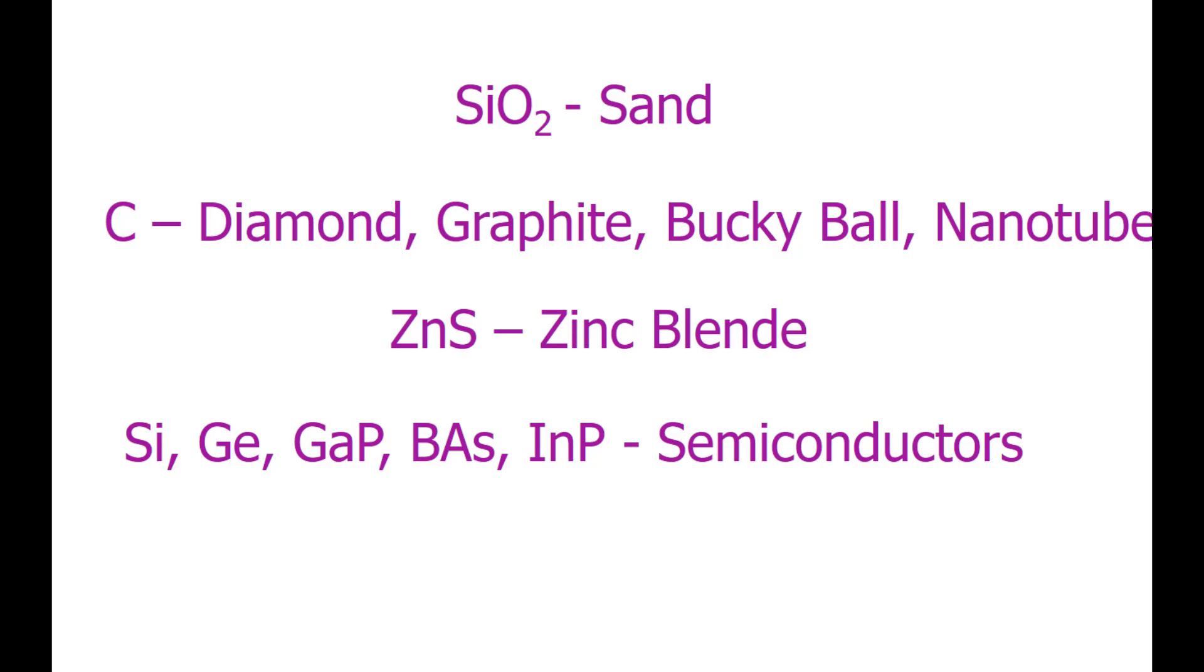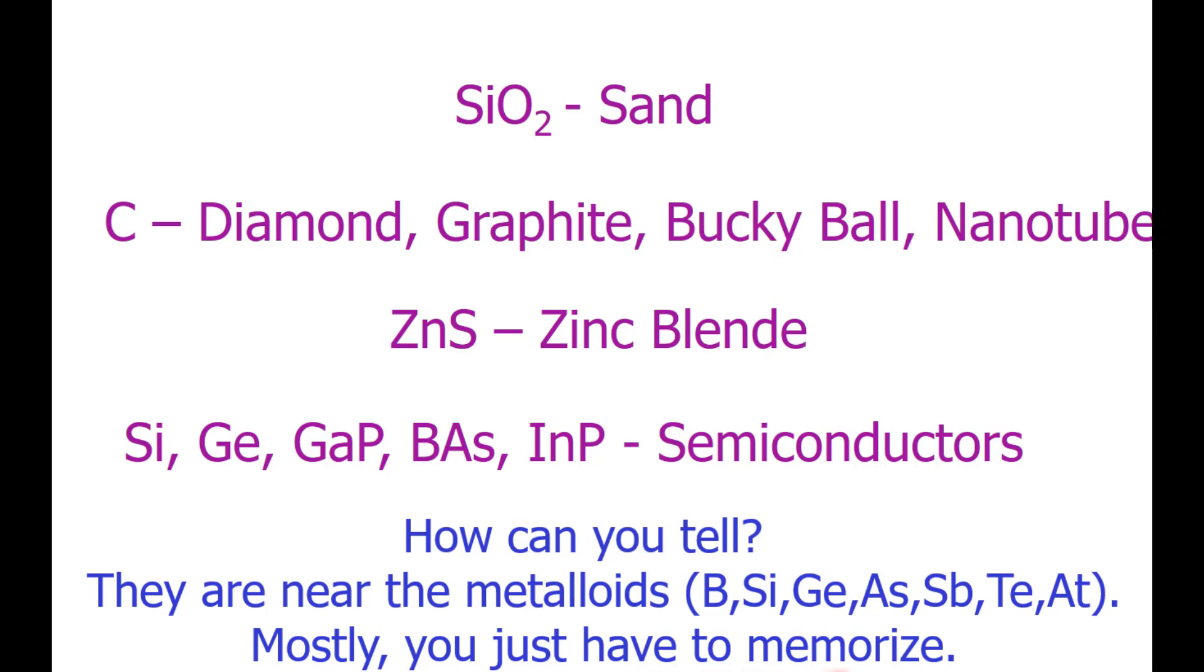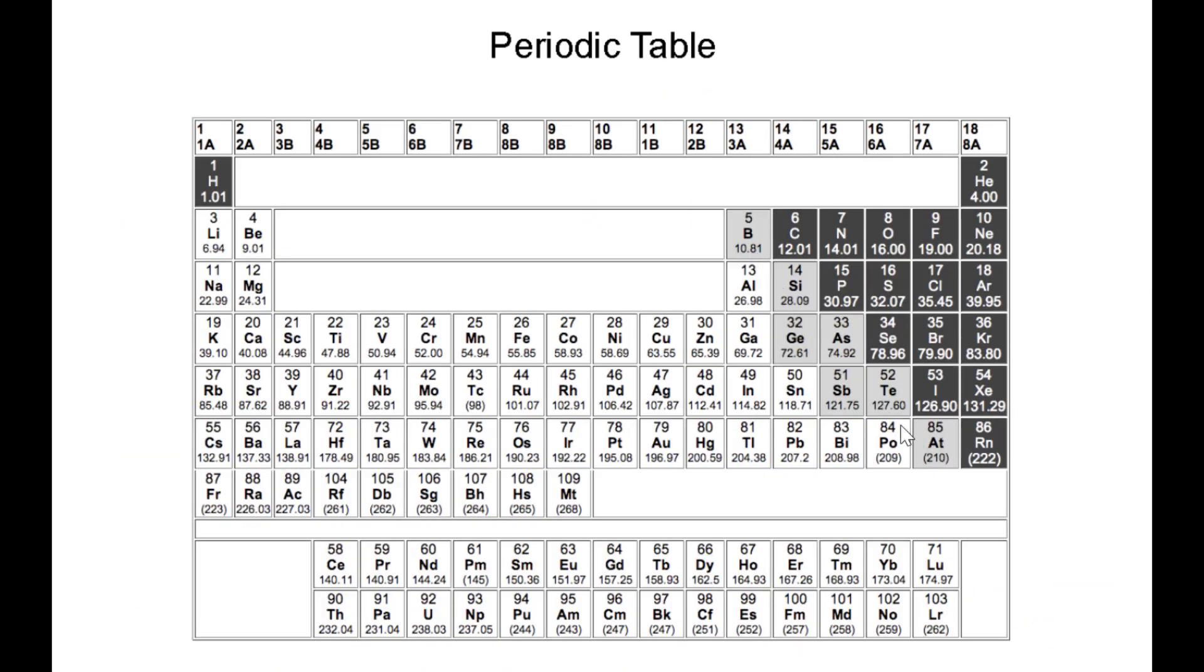Here is our list of network covalent solids: silicon dioxide, carbon in its many different forms, zinc sulfide, silicon, germanium, and then some 3-5 combinations that are semiconductors. How can you tell? Well, mostly you just have to memorize, but keep in mind many of these materials are near the metalloids on the periodic table. Here are our metalloids, and you notice silicon is here. Zinc sulfide is on opposite sides of the line defining the metalloid, and then some of our other ones like gallium arsenide, indium phosphide. They're definitely near the metalloids on the periodic table.